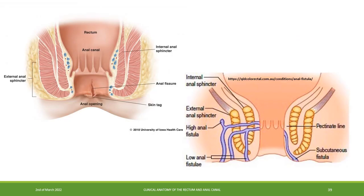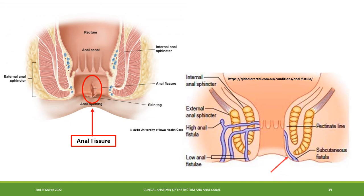In a chronically constipated person, the anal mucosa may be torn by hard feces, leading to anal fissure. It is usually located in the posterior midline, inferior to the anal valves. Fistula is an abnormal communication between two epithelial surfaces.